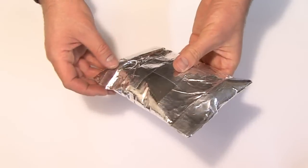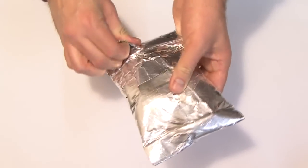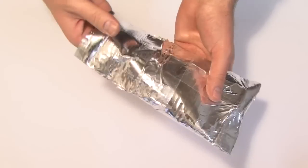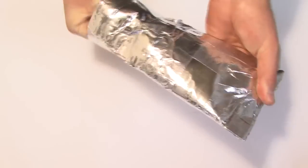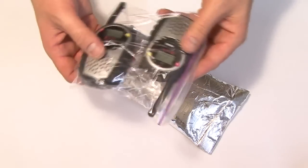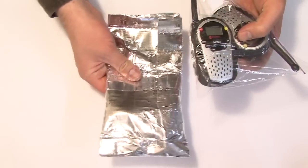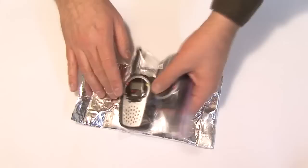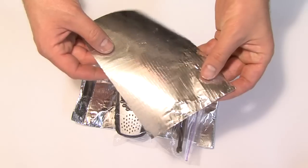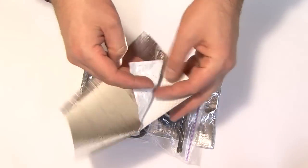Inside this bag I have, go ahead and open it for you, I have a set of walkie-talkies and they're in a plastic bag. Now the material that you use to create a Faraday bag, the material that I used is this here. It's called RF shielding.